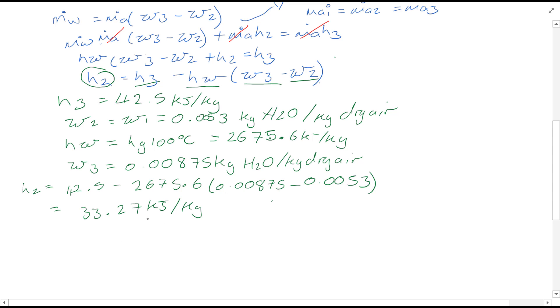And hence now we've got our two values we know H2 and we also calculated omega 2. So using these two values, chart A31 page 46, T2 is equal to 19.5 degrees C and relative humidity at 2 is equal to 37.5 percent.